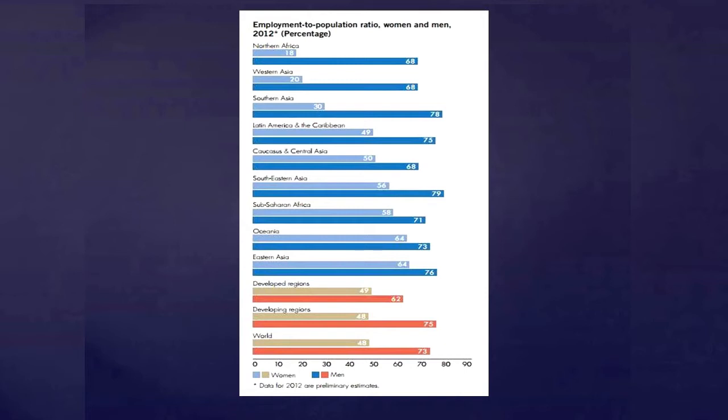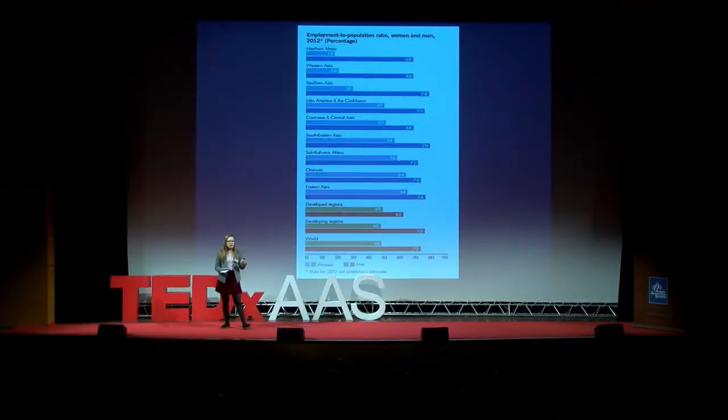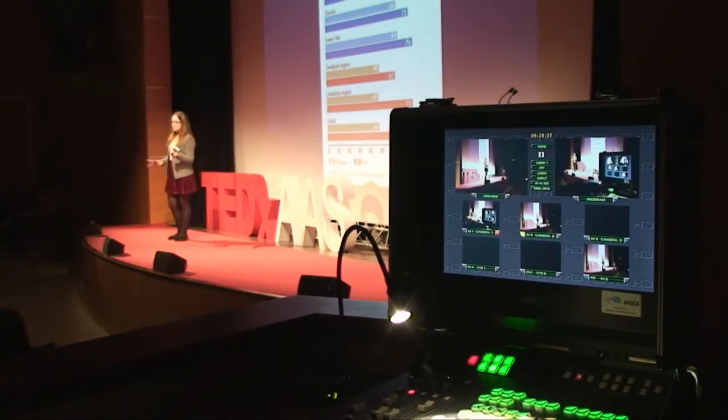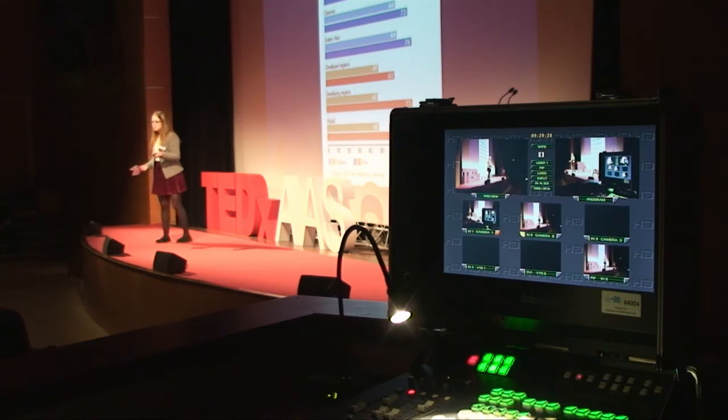Women produce 50% of the world's food, yet only own one to two percent of the world's property. Women work 60% of the total work hours in the world, however, they only receive 10% of the income. We're living in a 90 to 10 world. Can you imagine what the fruits of our labor would look like if we were living in a 50-50 world?